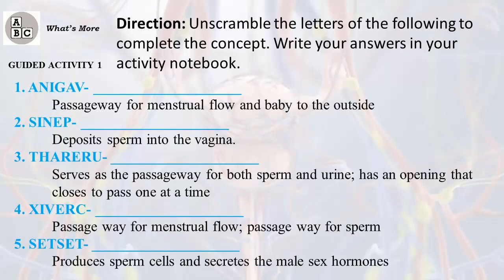Unscramble the letters of the following to complete the concept. Write your answers in your activity notebook. Functions to identify: passageway for menstrual flow and baby to the outside; deposits sperm into the vagina; serves as passageway for both sperm and urine; has an opening that closes to pass one at a time; passageway for menstrual flow and passageway for sperm; produces sperm cells and secretes the male sex hormones.